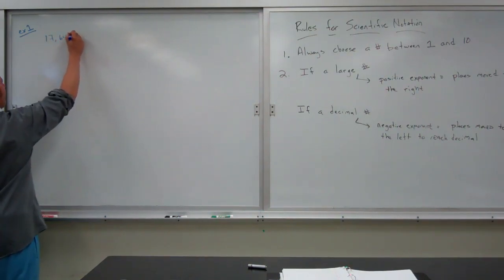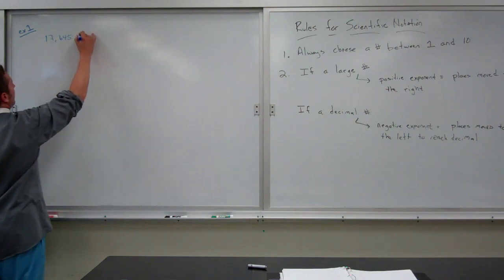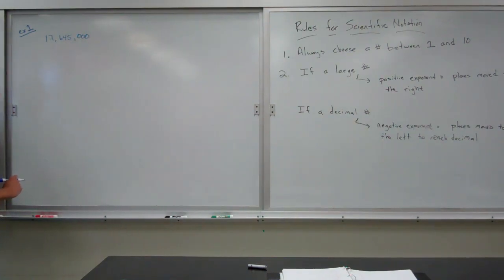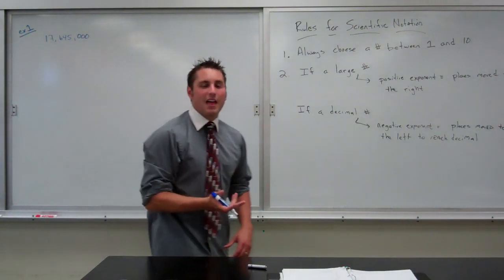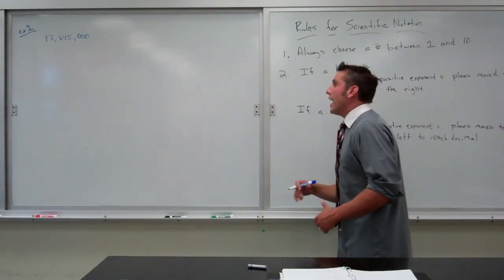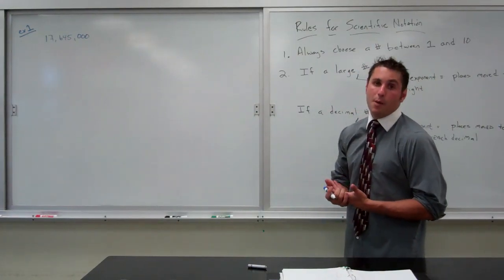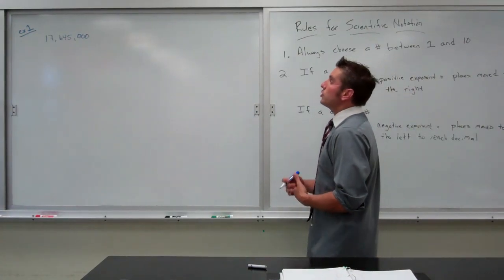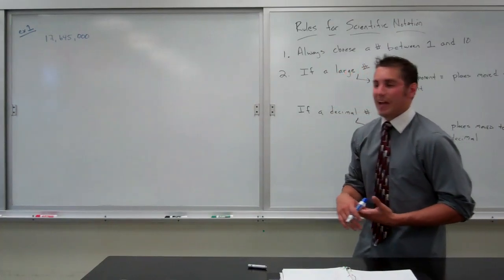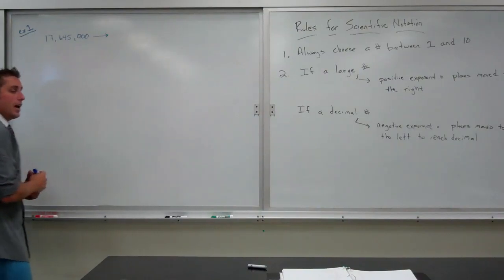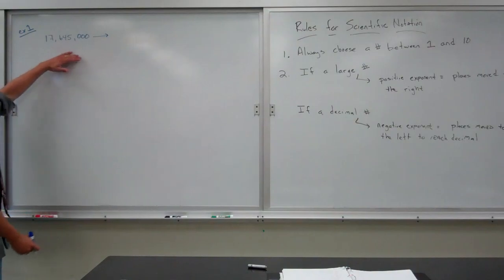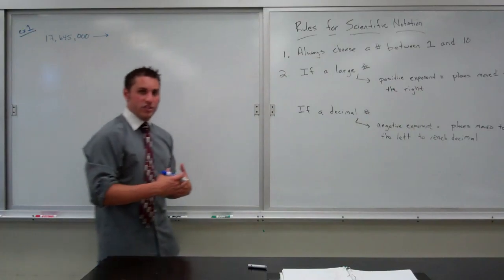If I have the number 17,645,000, it is not practical to continue to write that number over and over again in a math problem because it will take up a significant amount of space. So, what we do is we change it into scientific notation to make it much more manageable. Now, we're going to couple two ideas here together. The first is the one we just talked about, scientific notation. The other has to do with what we've been working on earlier in the chapter, which is significant digits.